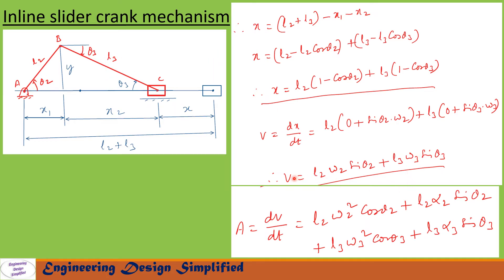Differentiating the velocity equation again gives the acceleration of the slider. After differentiating and simplifying, we get A = dV/dt = L2·omega2²·cos theta2 + L2·alpha2·sin theta2 + L3·omega3²·cos theta3 + L3·alpha3·sin theta3, where alpha2 is the angular acceleration of the crank, alpha3 is the angular acceleration of the coupler, and A is the acceleration of the slider.